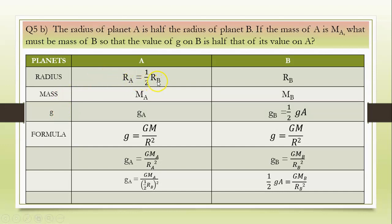So, RA is equal to half RB. Radius of planet B is RB. Similarly, mass A has been given. We have to find out mass of planet B. Acceleration due to gravity on planet A and the relation with acceleration due to gravity on planet B is given such that it is half of GA. Formula used in both the cases: g is equal to G into M upon R square, substituting the values given in the respective columns.